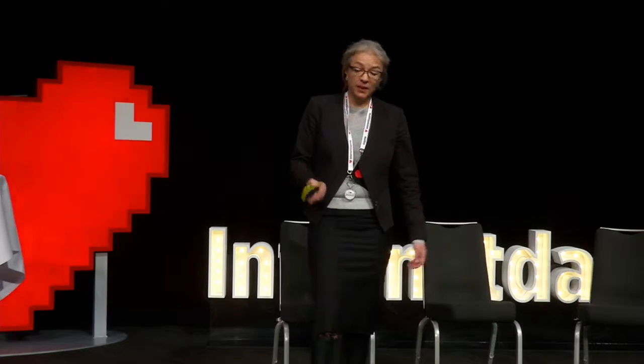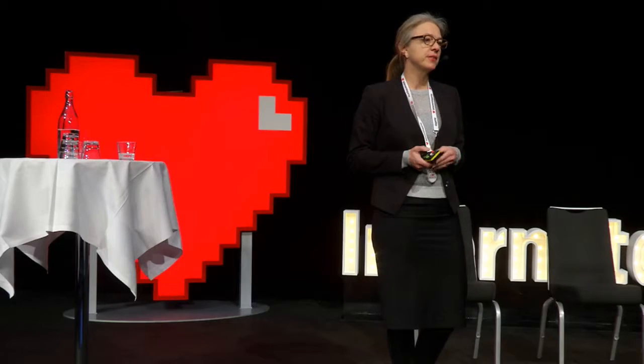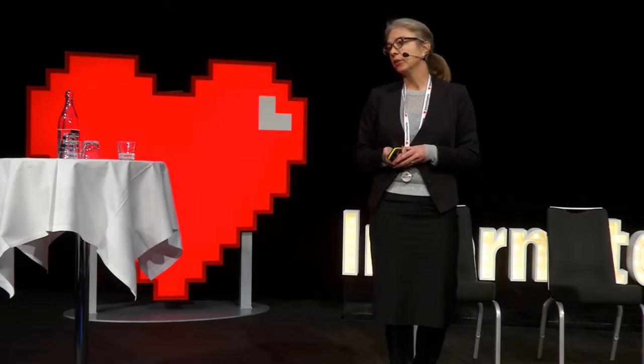We reserve the domain name for the registrant and send an email requesting them to correct the data. They can try three times. If they fail all three times, they can use NEMID — a digital signature system — which ensures the person filling in the data is the actual registrant due to full traceability. It's not mandatory, but it becomes the fallback after three failures. They have two months to correct the data; if not, the reservation is canceled.